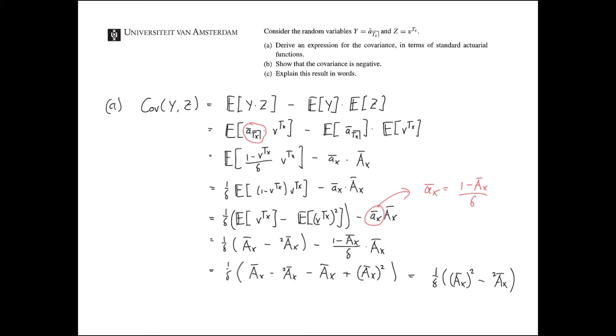Now, for the second part, we have to show that this is actually negative. So the conclusion of part A was, this is equal to the 1 over delta, A bar x squared, minus 2 A x. Now, for part B, we have to show that this is negative. And we know, well, we know that this expression here in A, this is about the first moment squared minus the second moment.